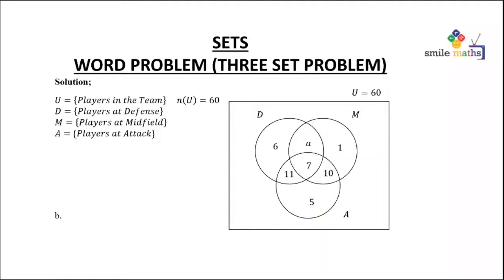Now looking at all the people in attack, we have 7 plus 10 plus 5 plus 11, that is adding everything in the circle A, giving us 33. Now we did this so that once you add everything in A, we won't go through the stress of adding everything separately. We will just represent the number of elements in A by that number.